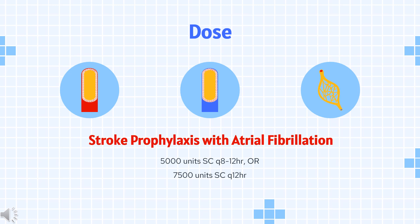Acute coronary syndromes — PCI. Without GPIIB/3A inhibitor: initial IV bolus of 70–100 units/kg, target ACT 250–300 seconds. With GPIIB/3A inhibitor: initial IV bolus of 50–70 units/kg, target ACT greater than 200 seconds.